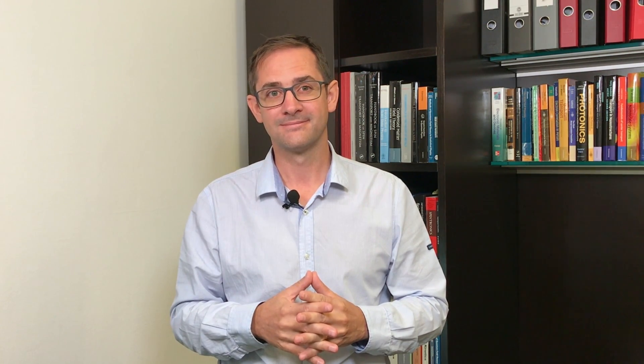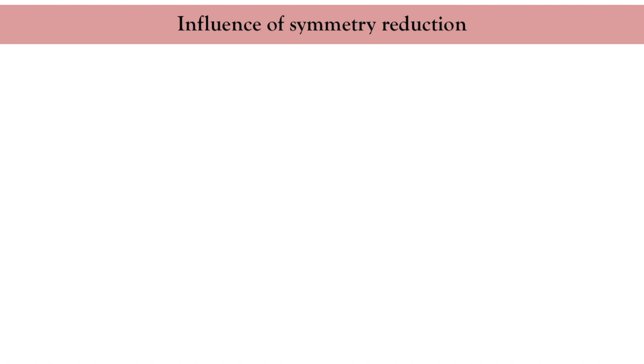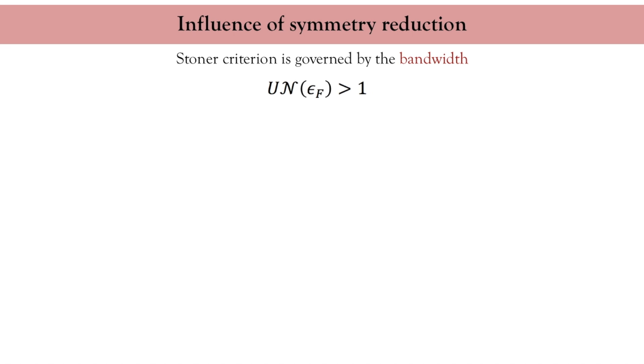In such situations the density of states is modified locally, which opens the possibility to enhance magnetism. You remember from the previous discussion that magnetism emerges in metals when the product of the Stoner exchange energy and the density of states per atom exceeds 1.